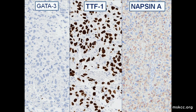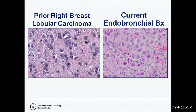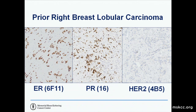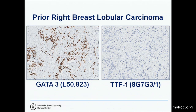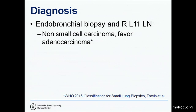I did breast versus lung markers, and the tumor is negative for GATA-3 and positive for the lung markers. I also reviewed her prior breast carcinoma using digital imaging. In side-by-side comparison they looked slightly different. The prior breast carcinoma was positive for ER and PR, compatible with lobular carcinoma. Dr. Brogy felt strongly about getting GATA-3 and TTF-1 on the prior tumor to confirm the original diagnosis, which was correct — GATA-3 positive and TTF-1 negative. The final diagnosis is non-small cell carcinoma, favor adenocarcinoma.